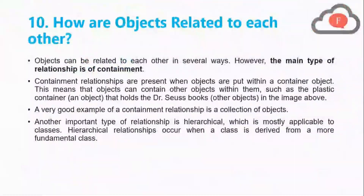We will now move on to the 10th point: how objects are related to each other. Objects can be related in several ways, but the main type of relationship is containment. Containment relationships occur when objects are placed within a container object — like containers in a port where each container holds goods. A very good example of a containment relationship is a collection of objects.